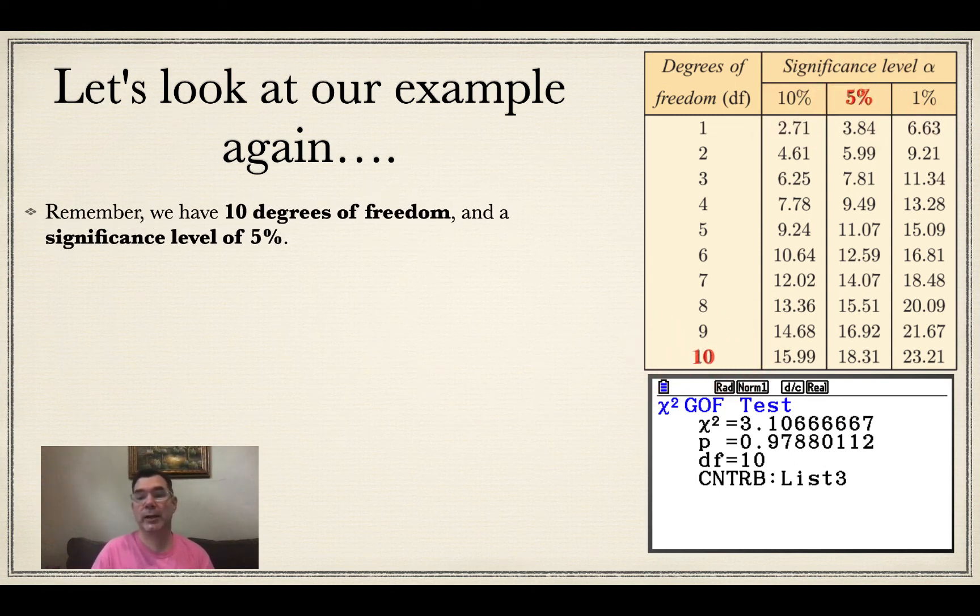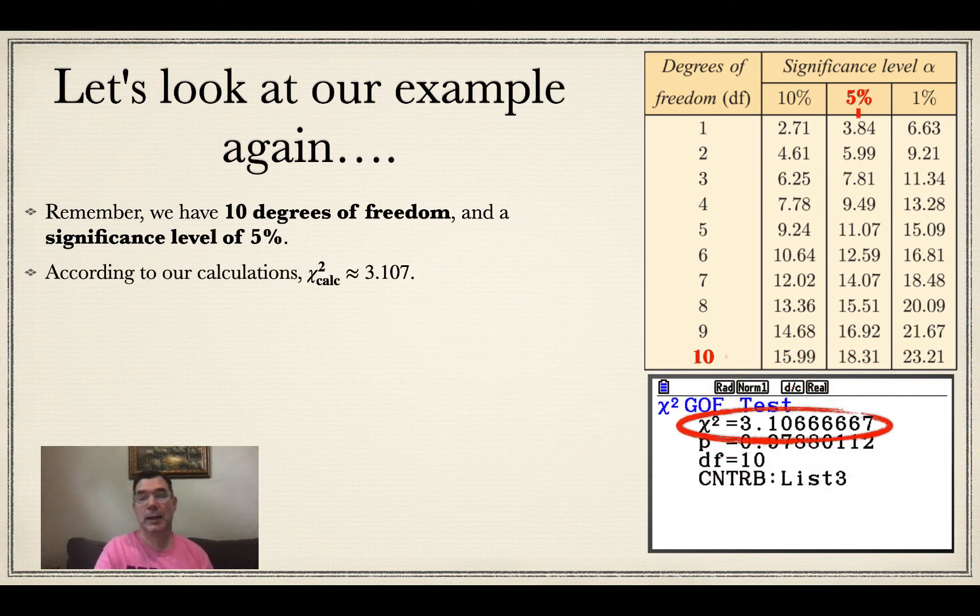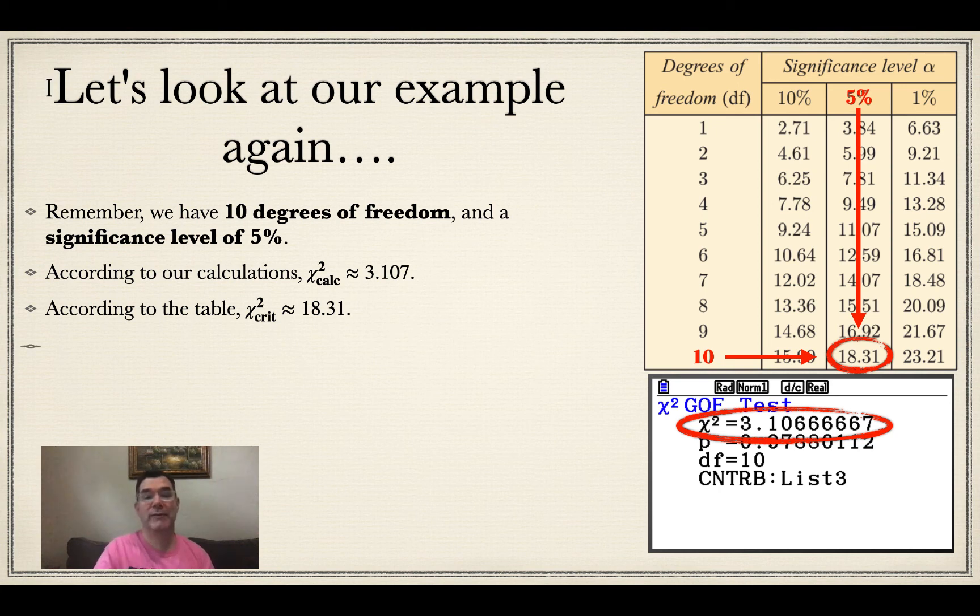I have my calculator output and I have my table. So what I notice is in the problem, I had 10 degrees of freedom and I was using a significance level of 5%. So in the table, I look at where these line up and they line up at 18.31. And if I compare that to what my calculator gave as a chi-squared calculation, that's 3.107 approximately.